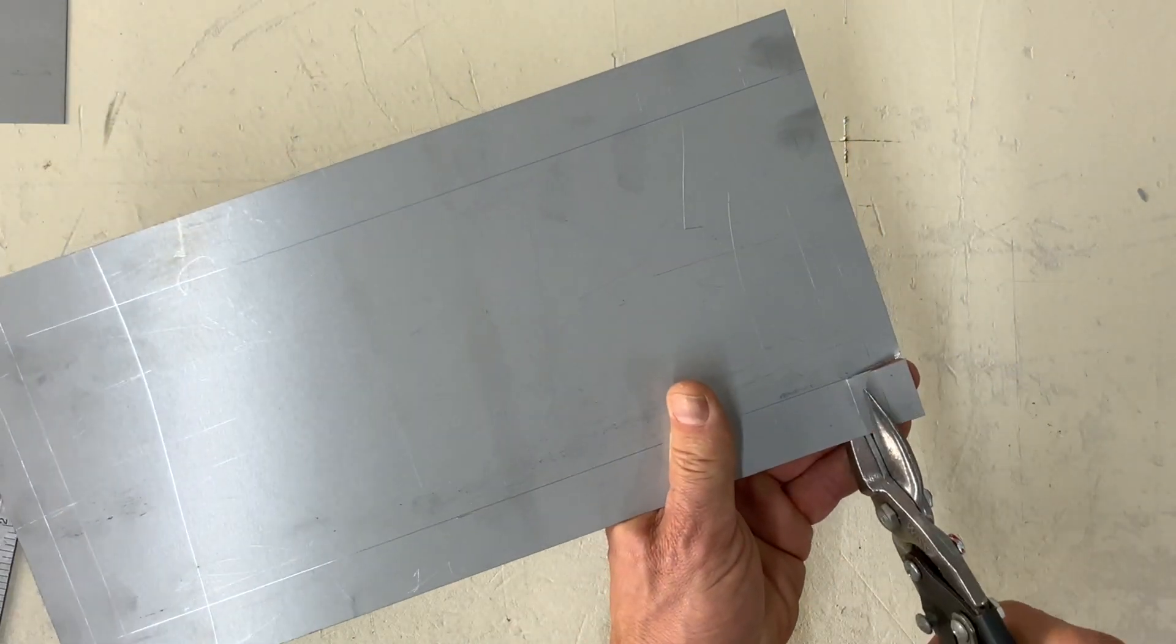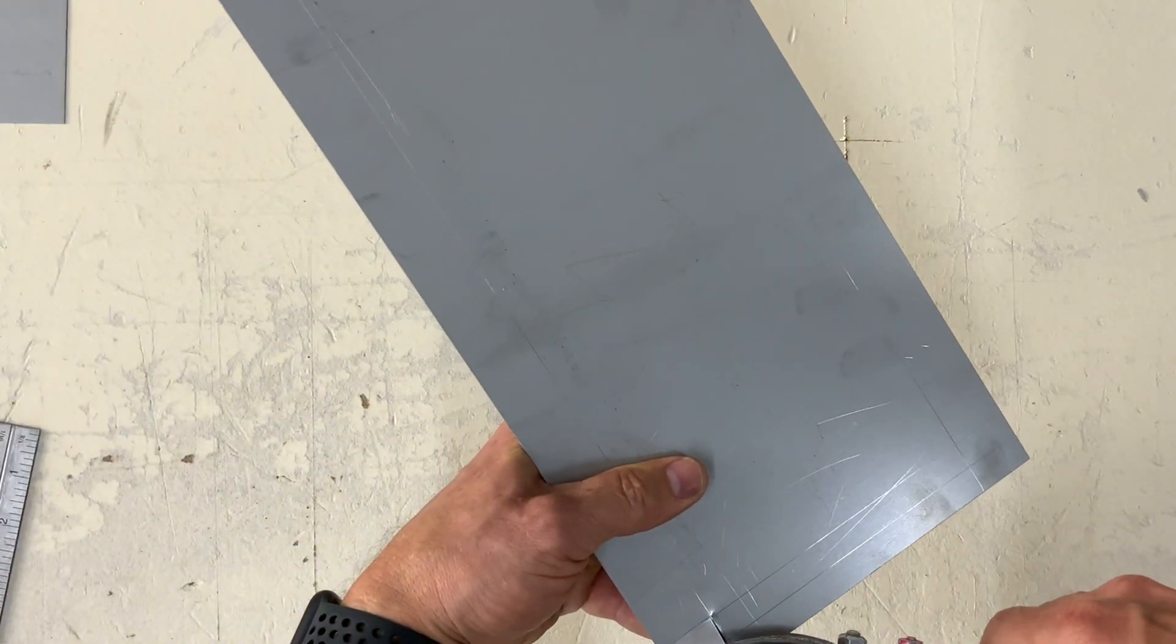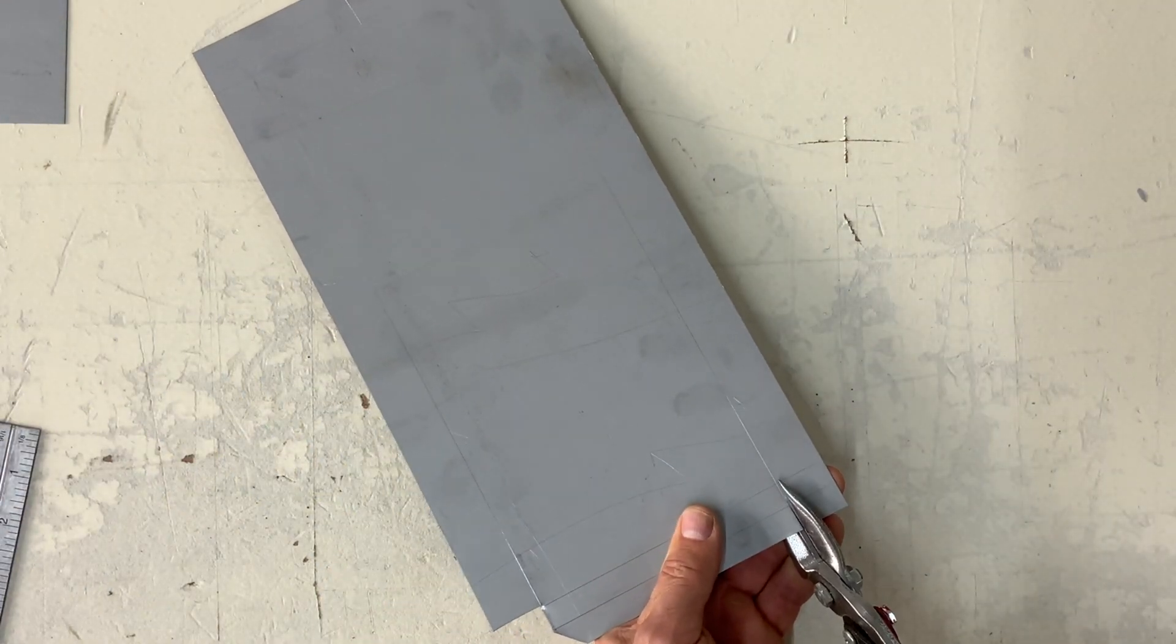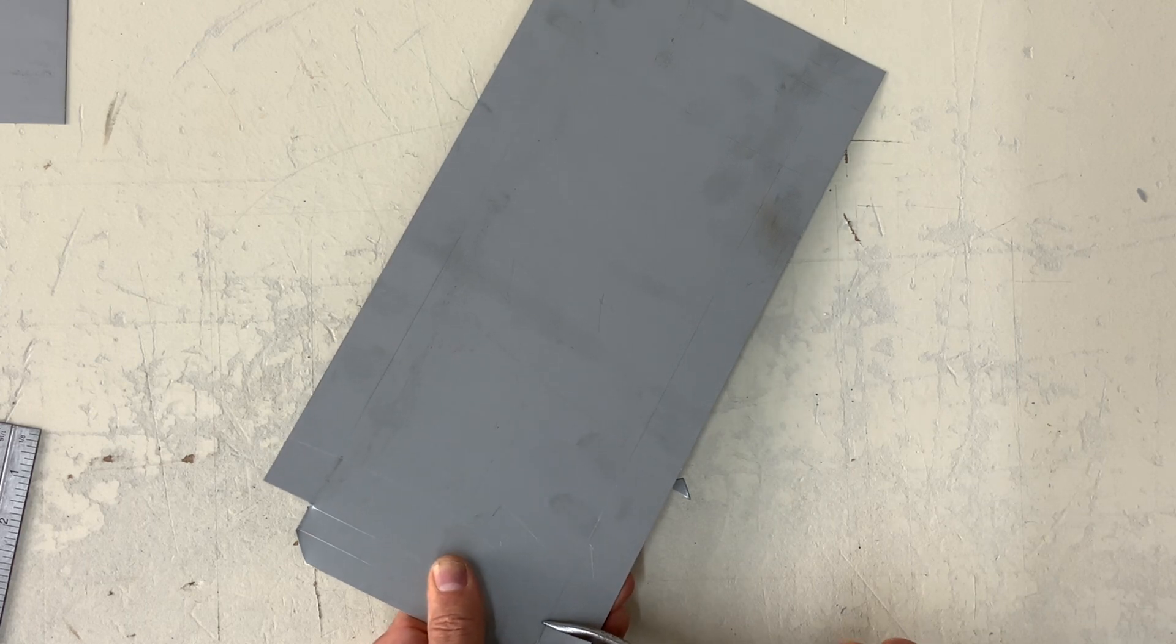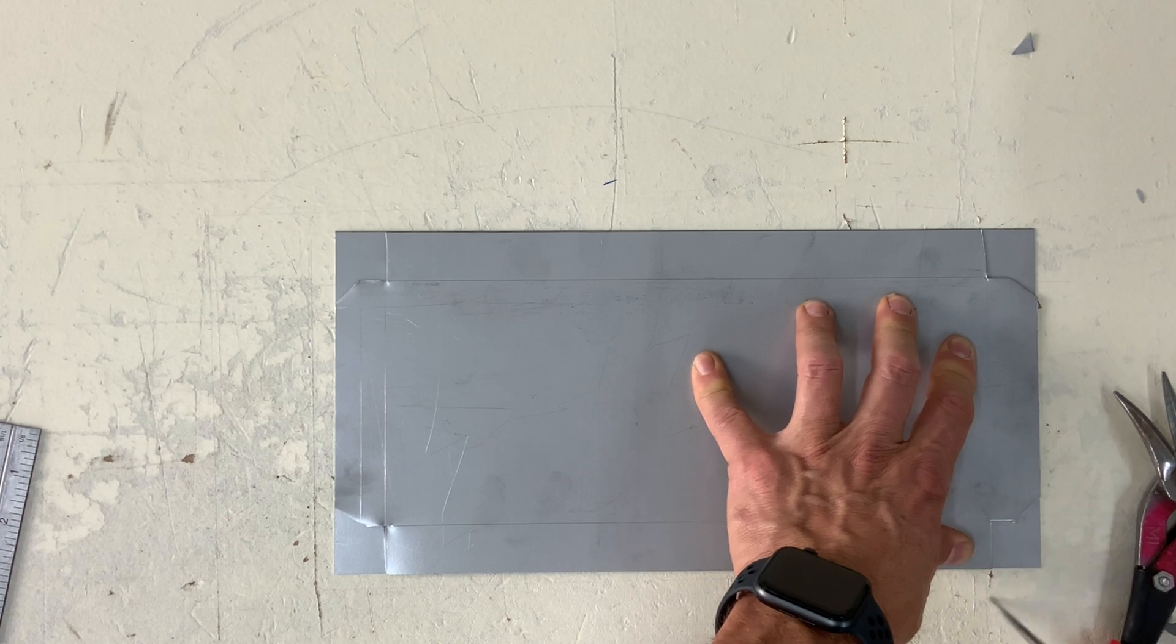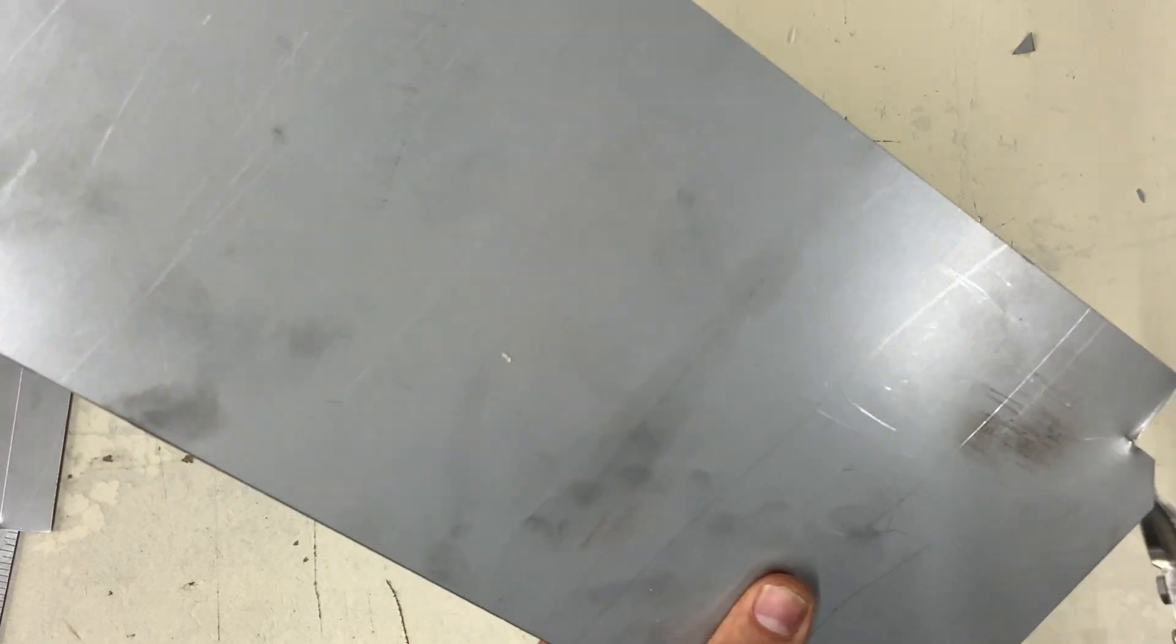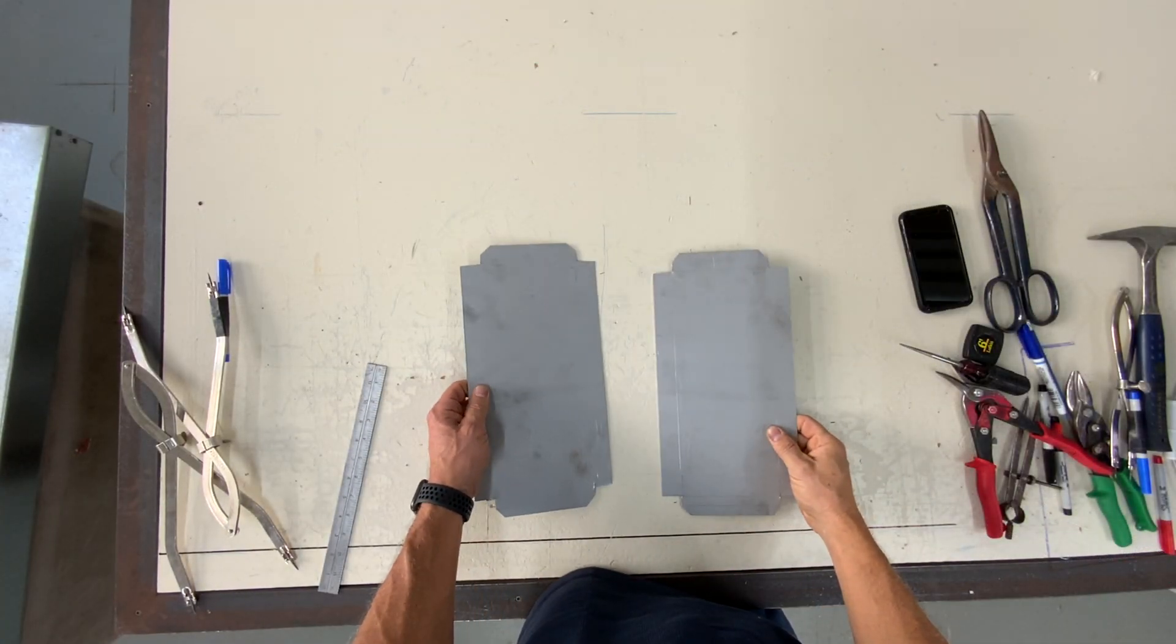So this is how I notch my wrappers. Do this to all four corners and then duplicate this piece. There you have it. Two identical pieces. Let's go to the lock former.